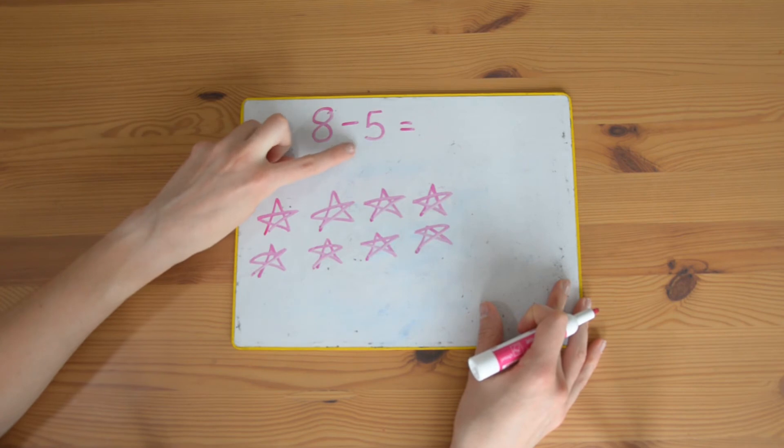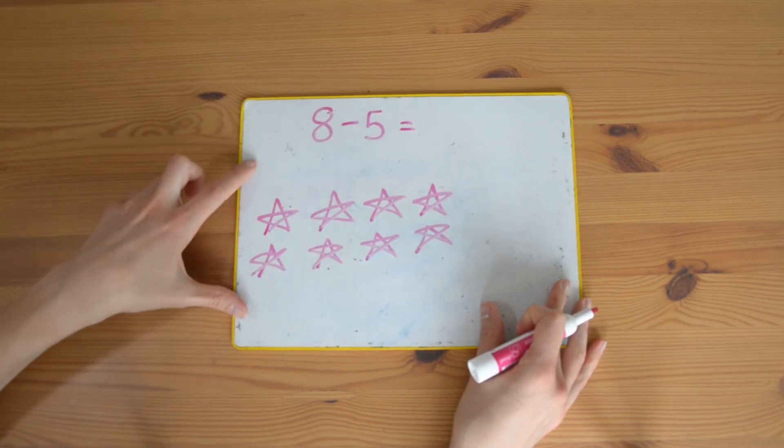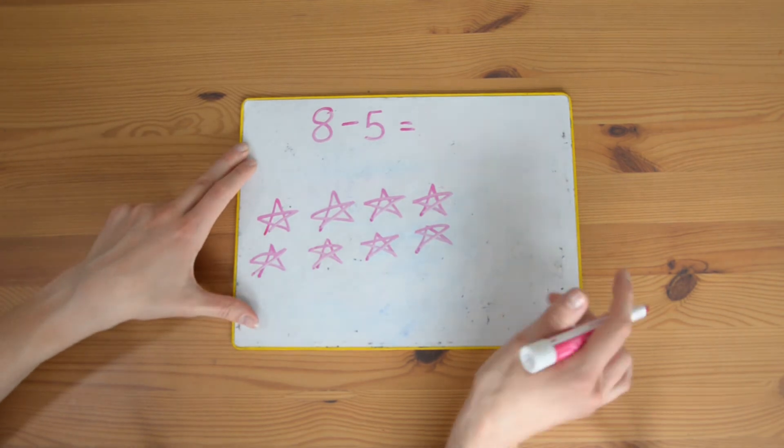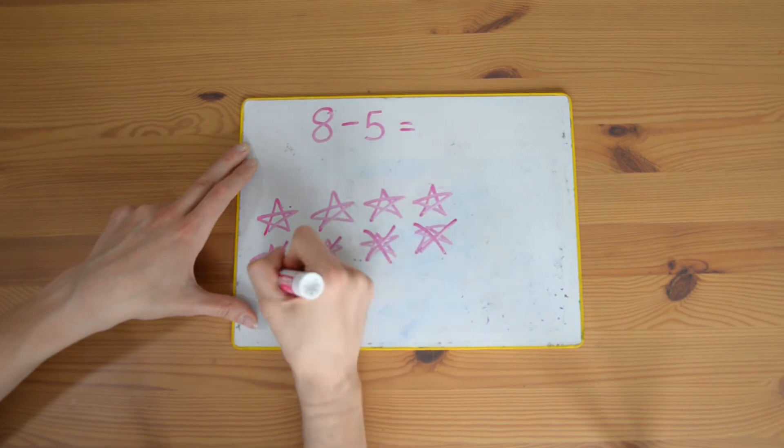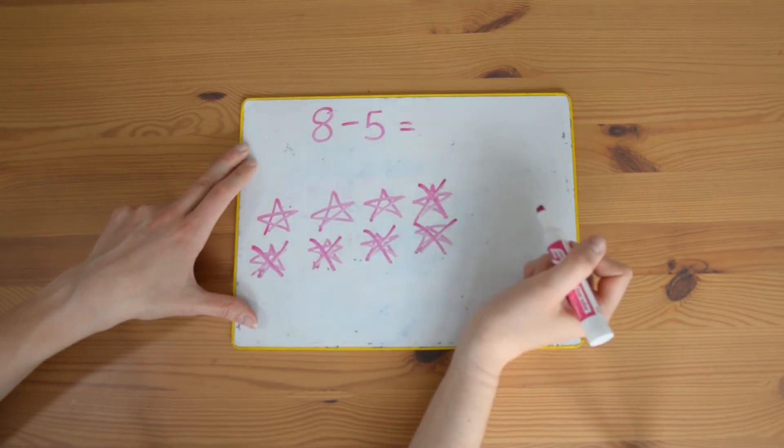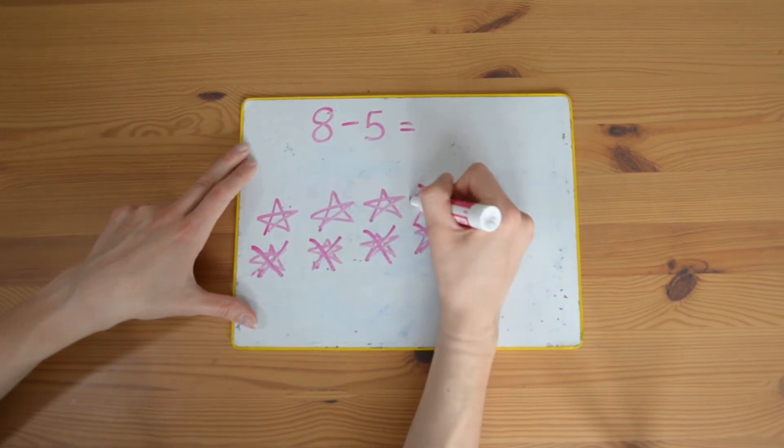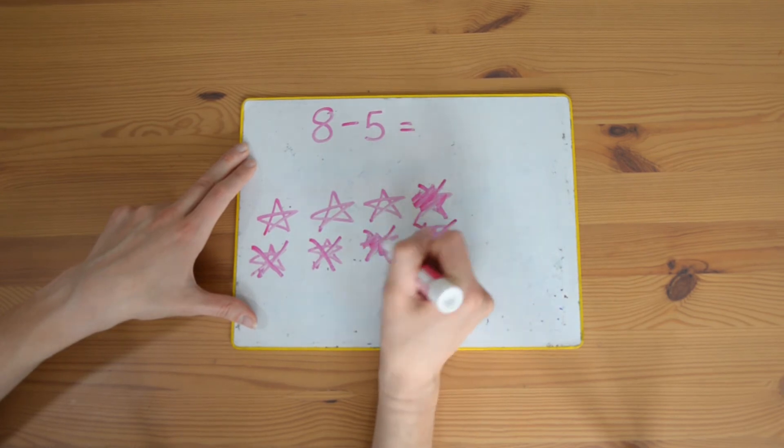Now let's see how many I need to take away. Take away five, so how many do I need to cross out? Five: one, two, three, four, five. Now because it's a little bit hard to see, I'm just going to make it a little bit more obvious.